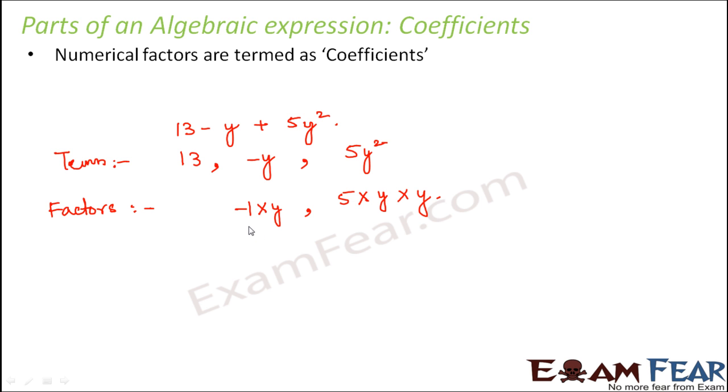So here we see that minus 1. What is this minus 1? This minus 1 is a numerical factor of y, because it is a factor of y and it is also numeric. Similarly, when you look at this 5.